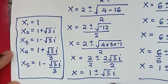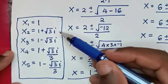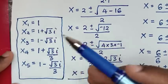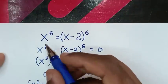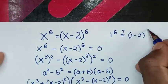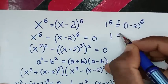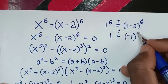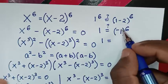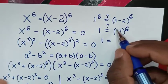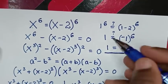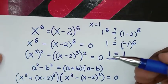To check, we verify the real solution x equals 1. Substituting into the original equation: 1 to the power of 6 equals 1 minus 2, bracket, to the power of 6. Left side: 1 to the power of 6 is 1. Right side: negative 1 to the power of 6 — a negative number raised to an even power is positive, so it is 1. Left side equals right side, confirming x equals 1 is correct. The complex solutions are also correct.